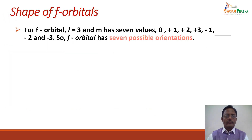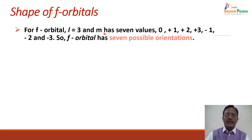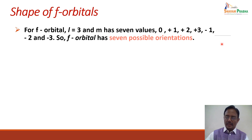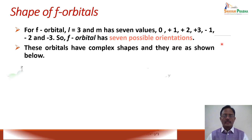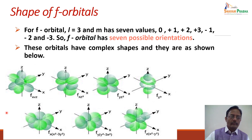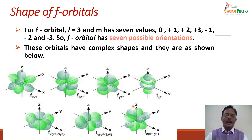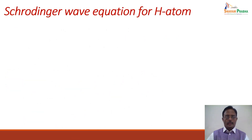For f orbitals, l = 3, so m can have values from +3 to −3, giving 7 possible orientations. These orbitals have complex shapes that cannot be easily described in words. The f orbital names include fxyz, fxz², fyz², fz³, and so on. There are 7 orbitals with different orientations and complex shapes for f orbitals.